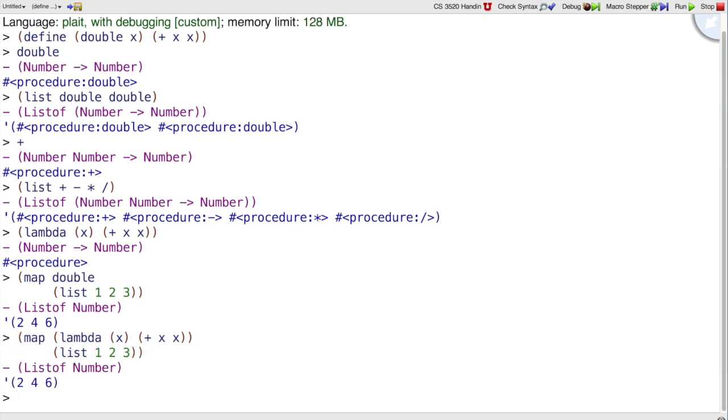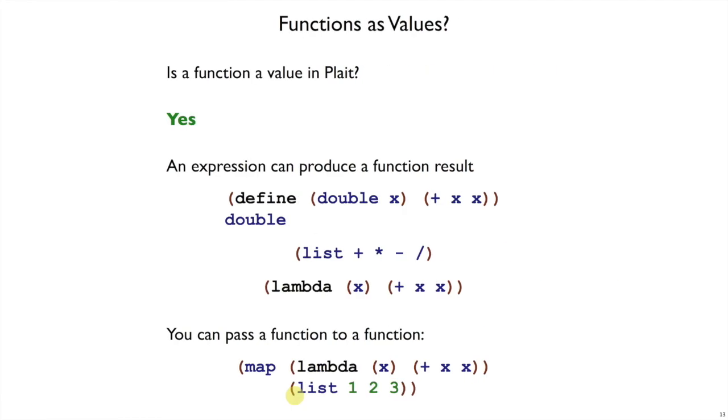And I will get 2, 4, 6. I'll show you some more examples of map and lambda in a little bit.